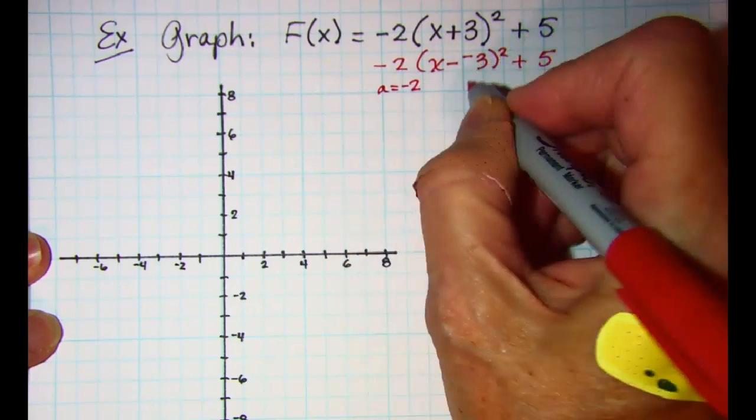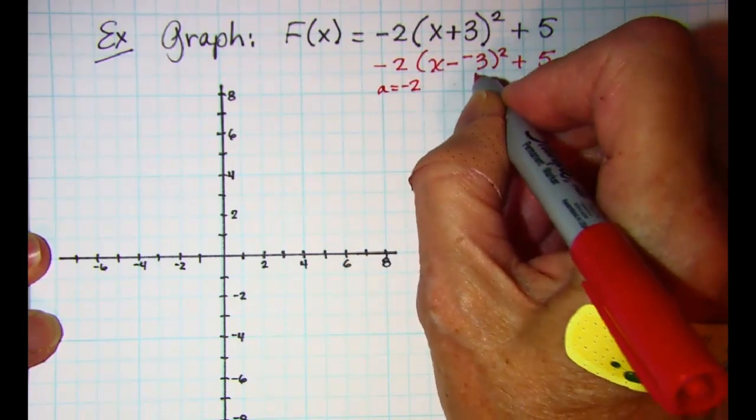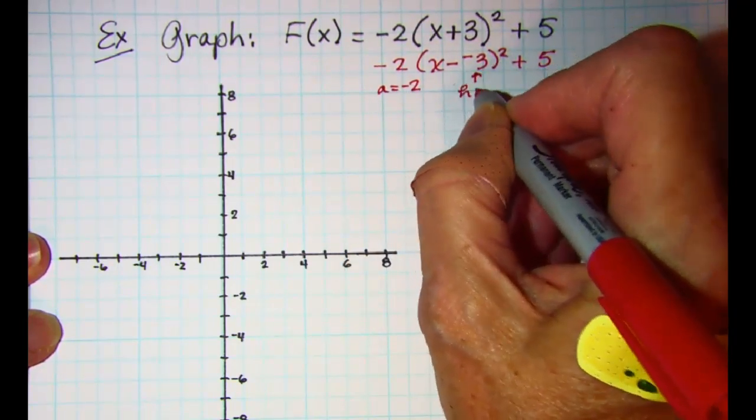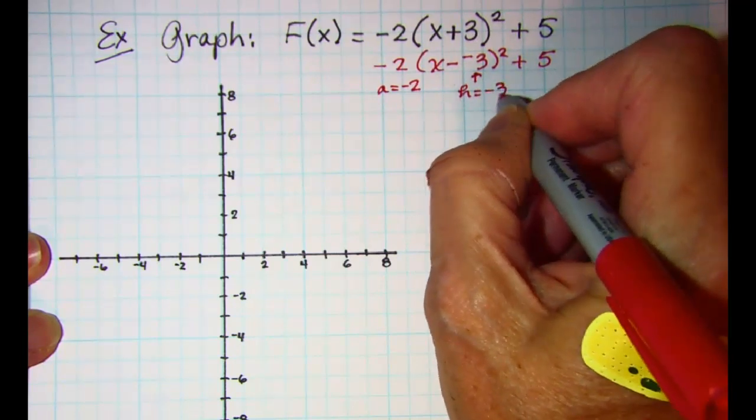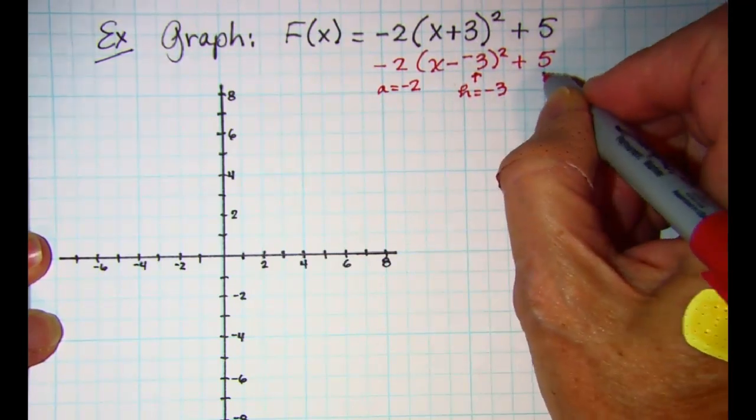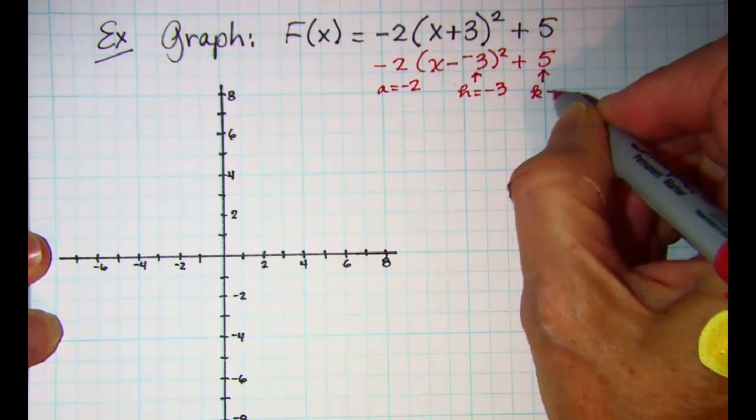So we see that a is negative 2, h is negative 3, and k is 5.